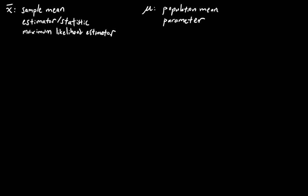I've seen x bar called the sample mean, an estimator or a statistic, or maximum likelihood estimator, whereas mu is often called the population mean or a parameter. But x bar and mu are not the same thing, they are however intimately related, so today I want to give you an intuition of what we're doing when we're calculating x bar.